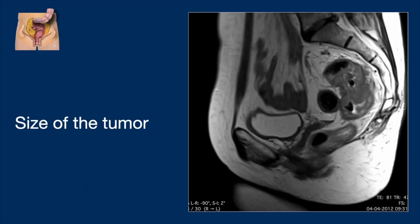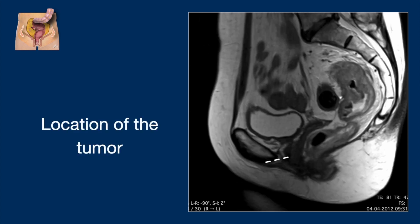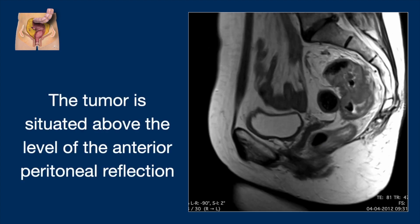What's the size of the tumor? It's about 44 millimeters. The location can be measured from the anorectal junction up, and it's about 8 centimeters. This tumor is situated above the level of the anterior peritoneal reflection, which is an important landmark. Here we have the peritoneum and this is the point of the anterior peritoneal reflection. Tumors above this level may infiltrate the peritoneum.